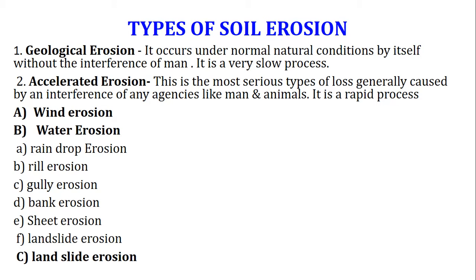Accelerated erosion is further divided into different types such as wind erosion and water erosion. Water erosion includes raindrop erosion, rill erosion, gully erosion, bank erosion, sheet erosion, and landslide erosion.